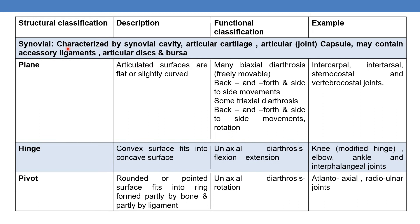There are six types of synovial joints. The first is the plane joint. In a plane joint, the articular surfaces are flat or slightly curved, and they are mostly freely movable. Plane joints include many biaxial arthroses — permitting back-and-forth and side-to-side movements — and some triaxial arthroses. Examples are intercarpals, intertarsals, sternocostal, and vertebrocostal joints.